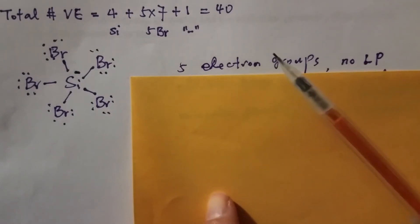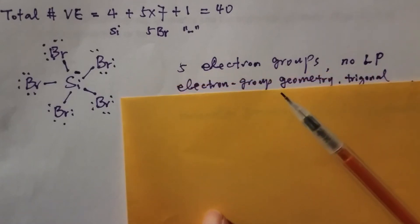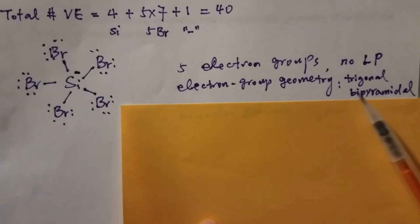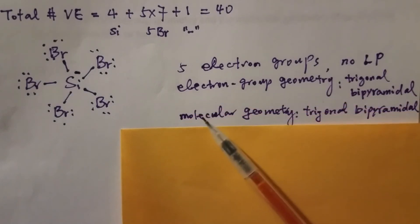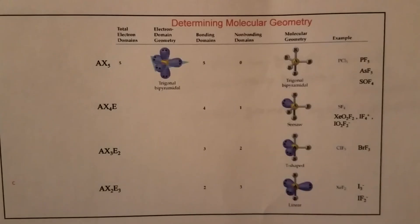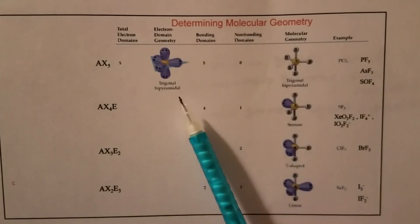Since there's five, the shape has to be trigonal bipyramidal. That's for both electron group geometry and also molecular geometry. Trigonal bipyramidal.